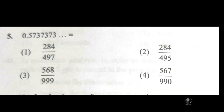The first option denominator is 497 and second option is 495. The digit 5 repeats in the second option denominator (495), and the third option also has 5. So second option is correct again, with numerator 284 and denominator 495. By this we can conclude that the correct option should be the second option.